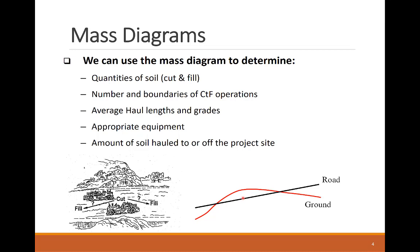For each identified CTF operation, the mass diagram will help in calculating the average haul length and grades of the earth-moving equipment. This information is critical to match different earth-moving equipment like dozers, scrapers, and trucks to their appropriate haul distances to end up with an economical operation.